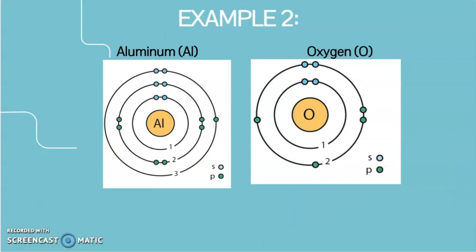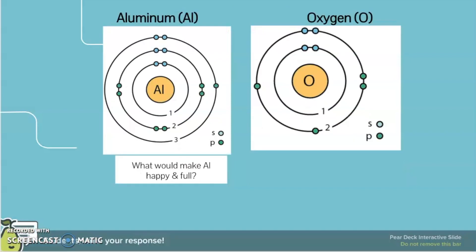This example is with aluminum, Al, and oxygen, O. Let's start by taking a look at aluminum. Now if you notice for aluminum, aluminum has one, two, three valence electrons.